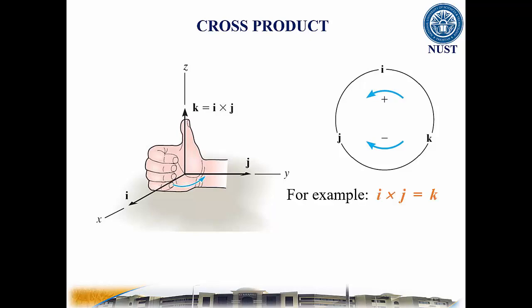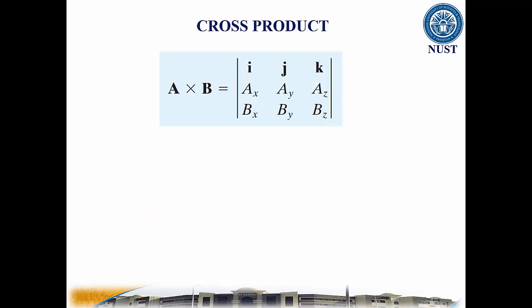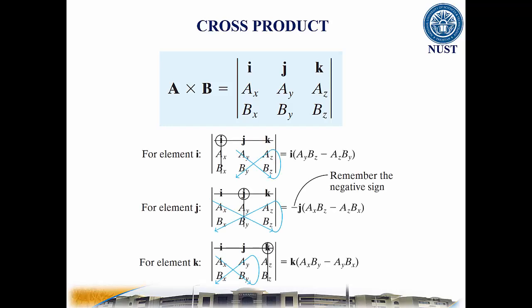For example, I cross J results in K. Also, notice that a vector cross into itself results in zero, such as I cross I gives you zero. Also, the cross product can be written as a determinant, such as shown here. Each component can be determined using two by two determinants.